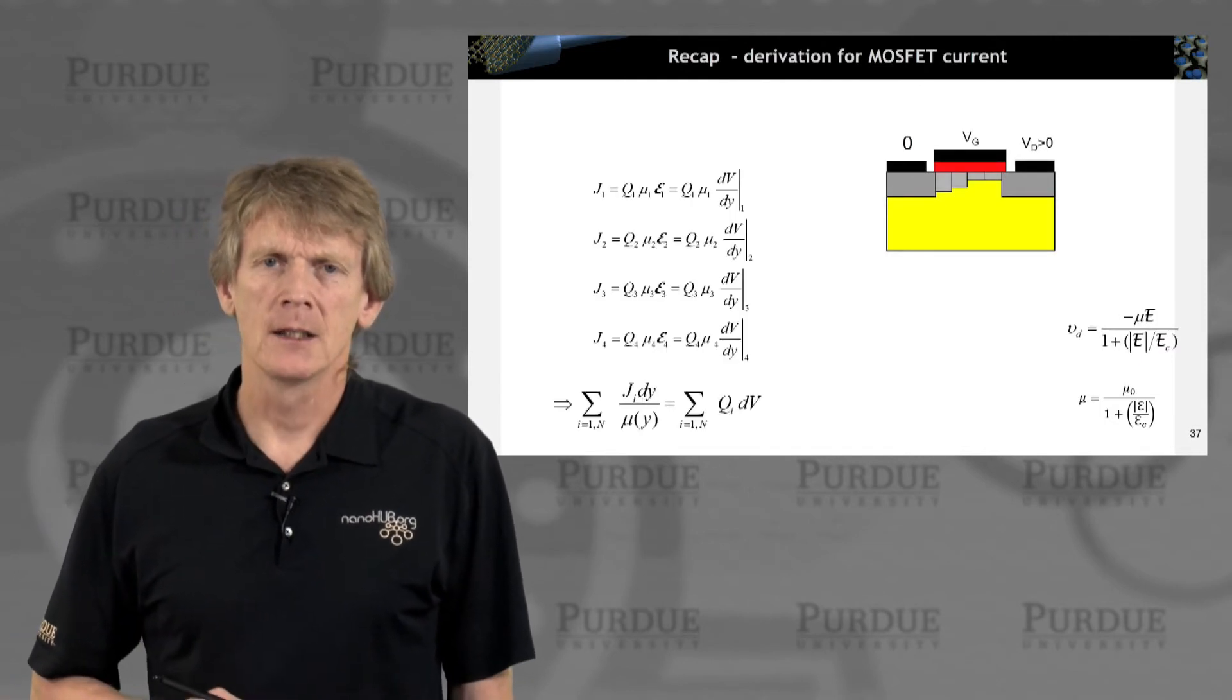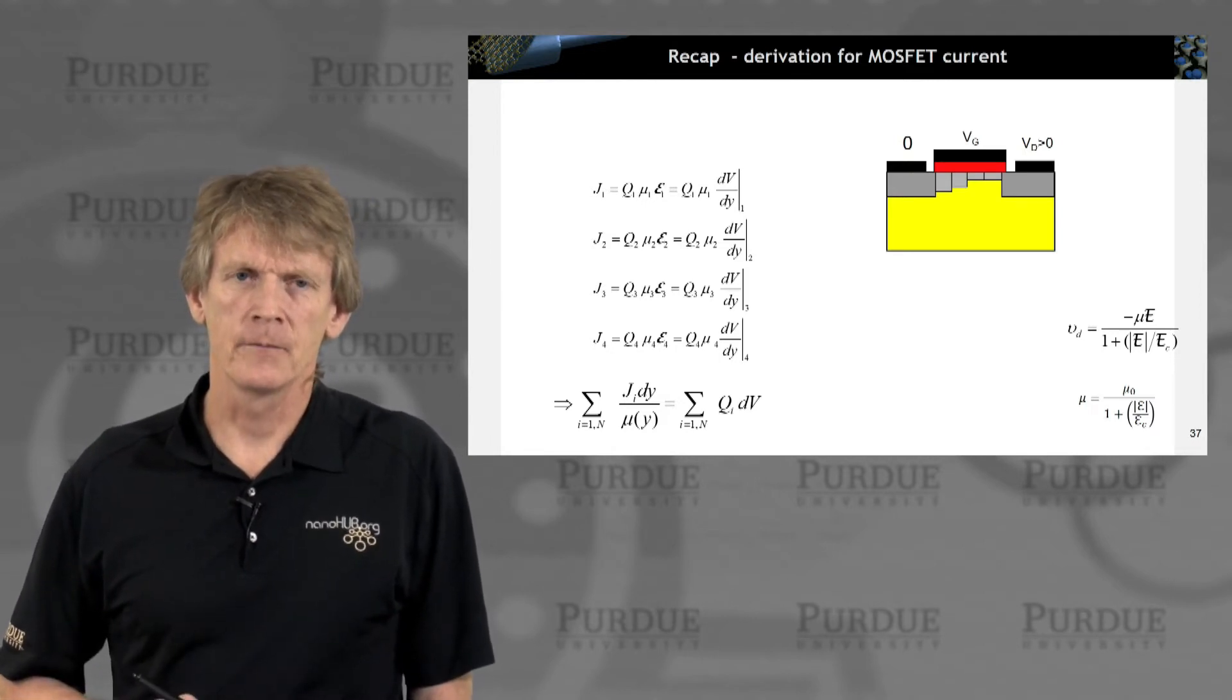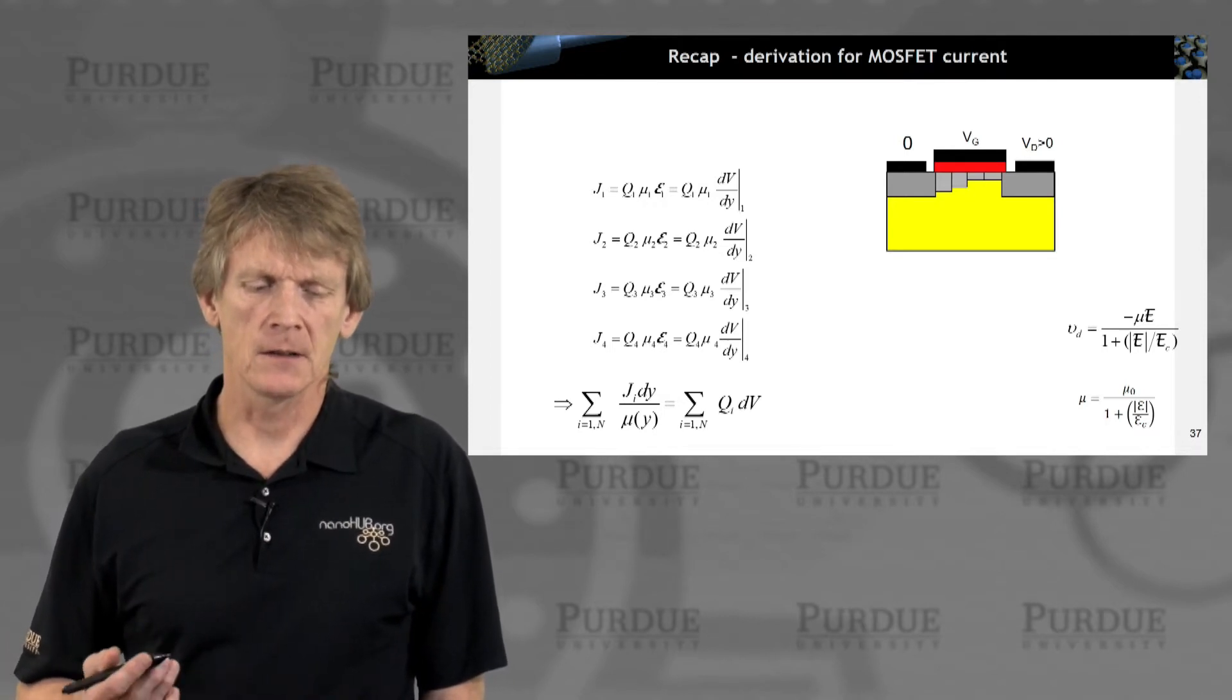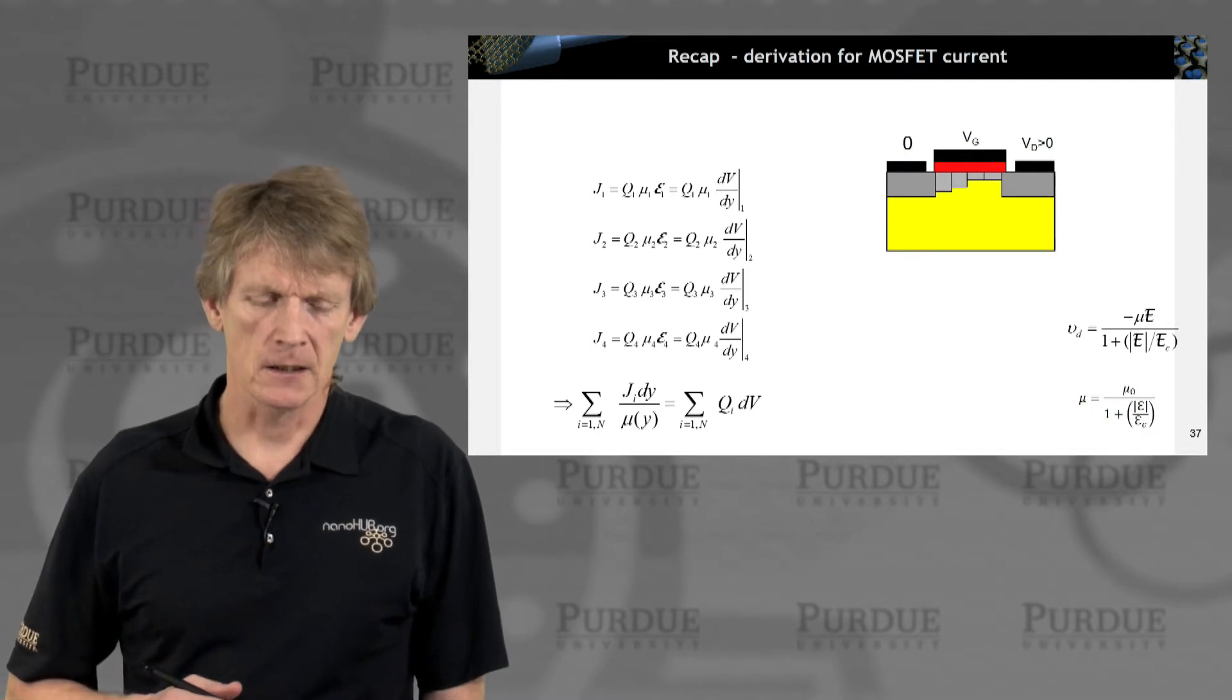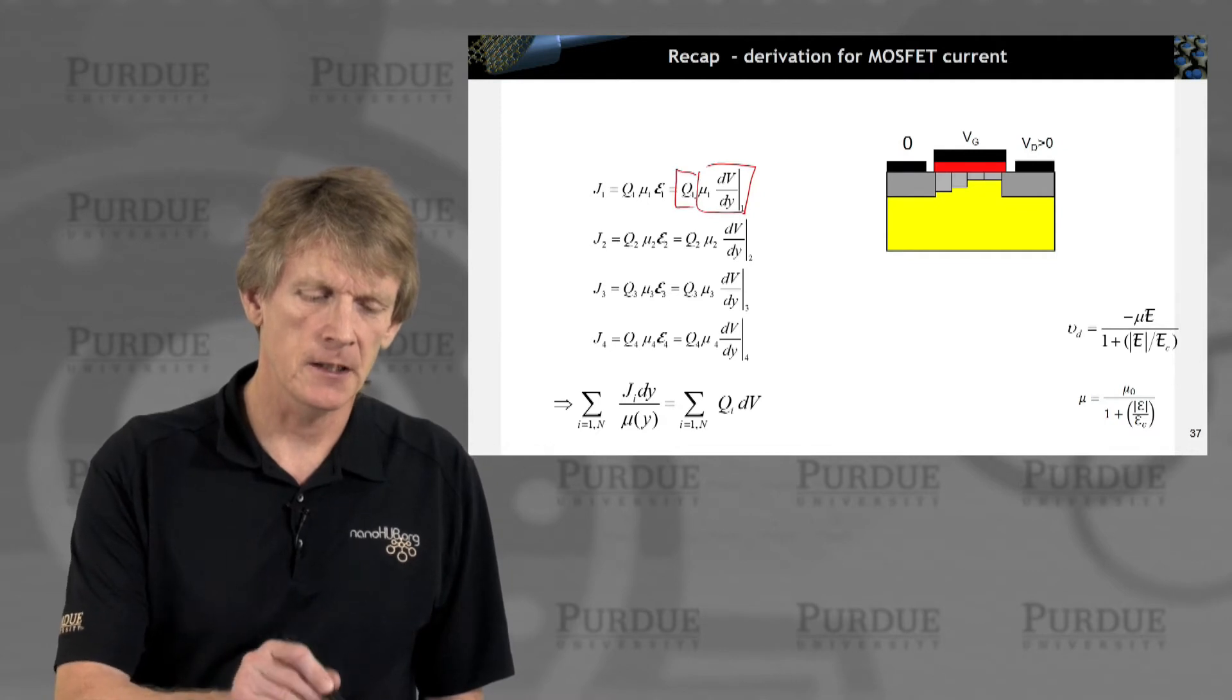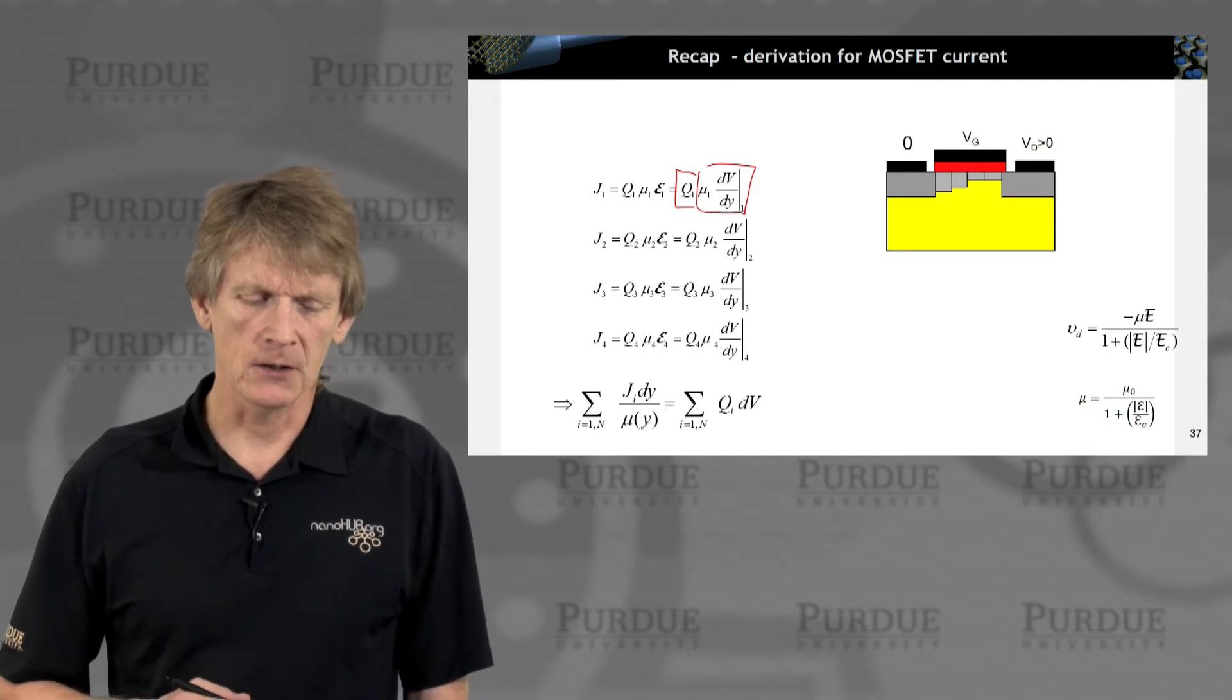You remember seeing these equations as we calculate the current throughout the MOSFET. And what we've done is integrate the charges along the channel and calculated their acceleration in the channel as well. So we had these mobility terms times electric field times charge, giving us a current flow in each segment of the device. And then we summed up the integral.